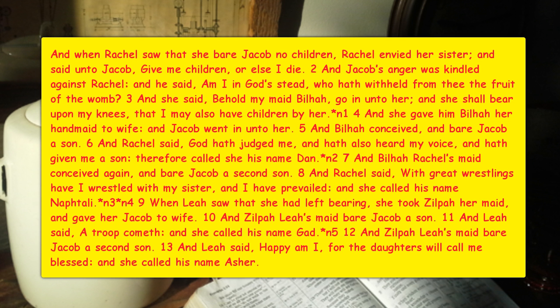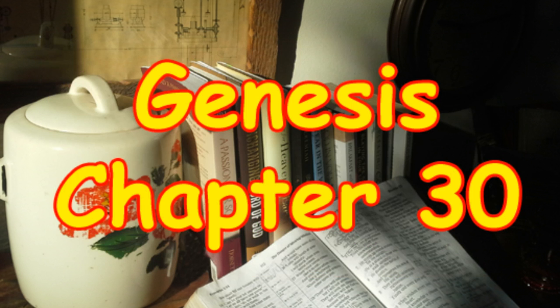Verse three: Rachel said, 'Here's my maid Bilhah, go into her and she will bear a child on my knees, and I also will have children by her.' If you remember way back, it would have been Jacob's grandmother Sarah who told Abraham to do the same thing — she said go into Hagar and have a son. Abraham went into Hagar and Ishmael was born. So Rachel tells Jacob to go into Bilhah, and in verse four she gave Bilhah to him as a wife — an important word, because in that culture he became married to her.